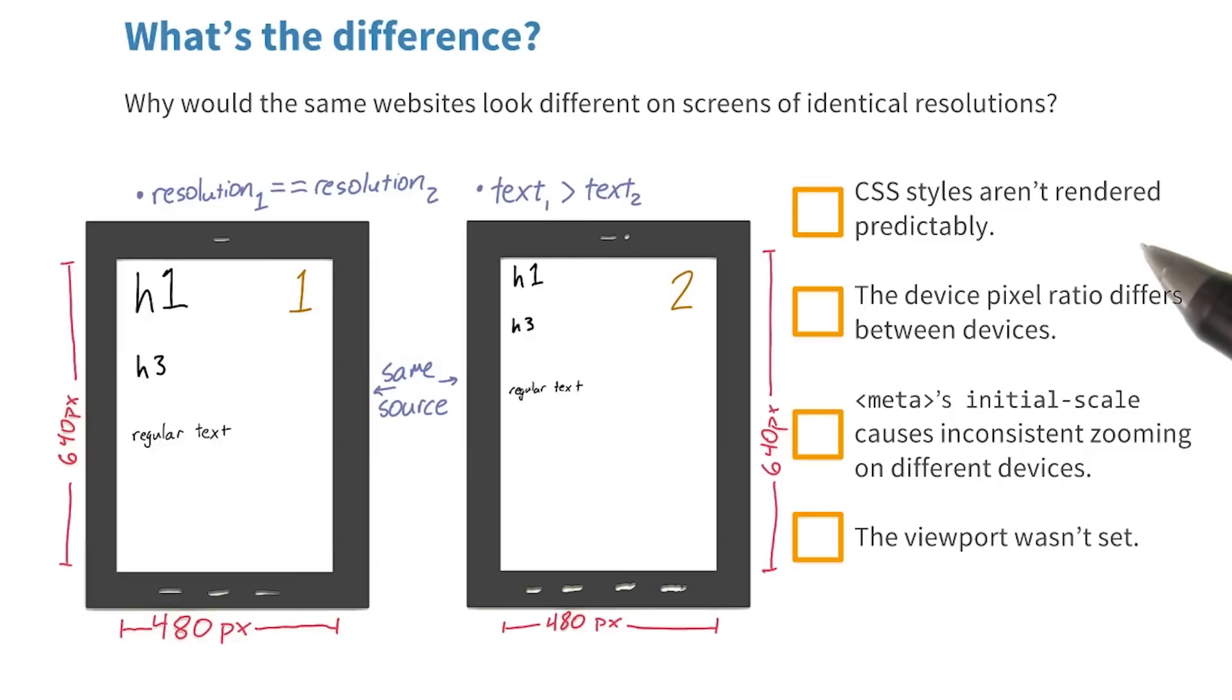Is it because CSS styles aren't rendered predictably? Is it because the device pixel ratio differs between the two devices? Is it because the meta tag's initial-scale property on the content attribute is causing inconsistent zooming on different devices? Or is it because the viewport was never set?